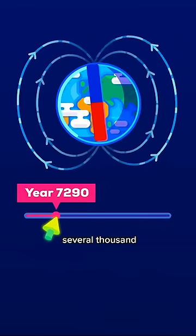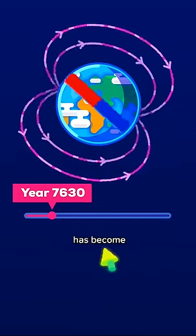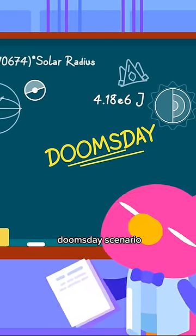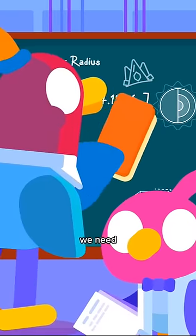This process can last several thousand years until magnetic north has become south and vice versa. It's not a doomsday scenario, but it's certainly a possibility that we need to be aware of.